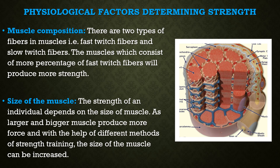Next is size of the muscle. The strength of the muscle largely depends upon the size of the muscle. It is a well known fact that a bigger and larger muscle can produce more force. The force produced by the same size of muscle in males and females is approximately the same, but males are found to be stronger because they have larger and bigger muscles in comparison to females. So strength is determined by the size of the muscle.